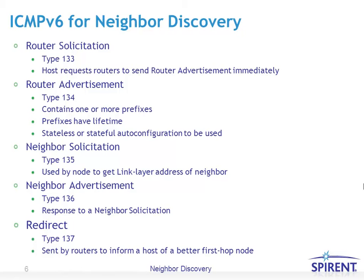Neighbor Solicitation, type 135, is used by a node to get the link layer address of a neighbor — whether another host on the same subnet or a router for off-subnet communication. Neighbor Advertisement, type 136, is used in response to a neighbor solicitation. Finally, a Redirect message, type 137, is sent by routers to inform a host of a better next-hop node.